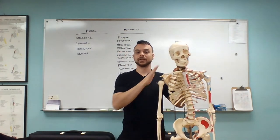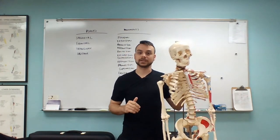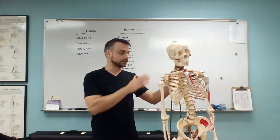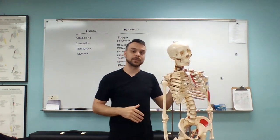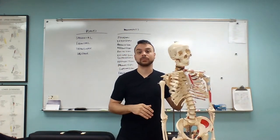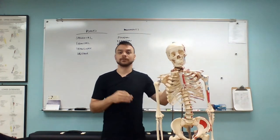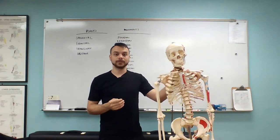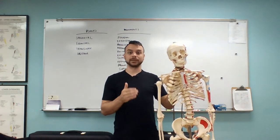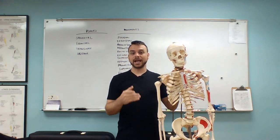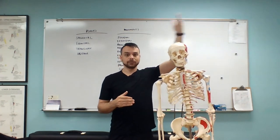These are imaginary panes of glass that are dissecting the body into certain parts. The first plane we're going to look at is what we call the sagittal plane. The sagittal plane cuts us into left and right parts.